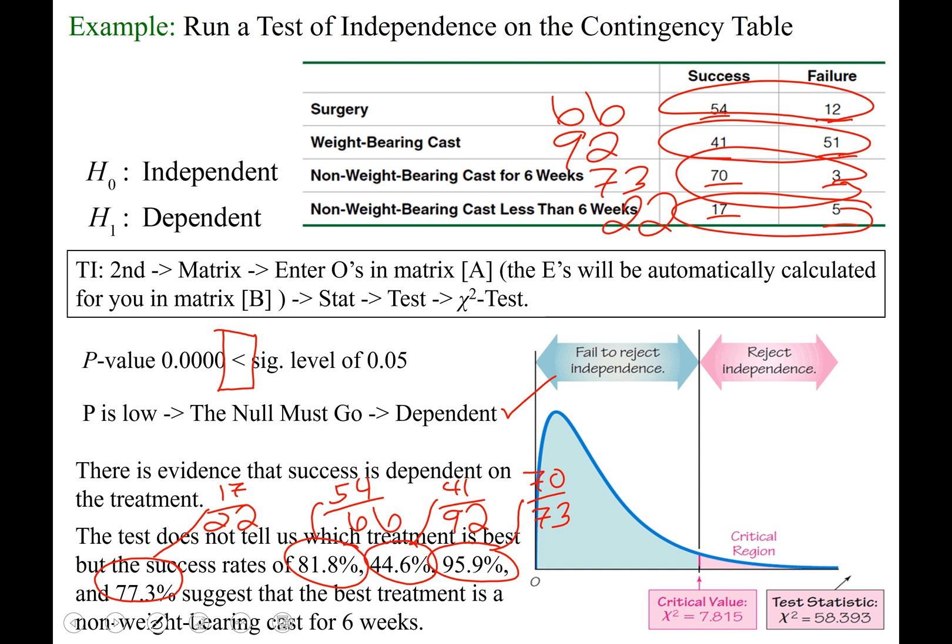Our critical value, chi-squared, was 7.815. Our test statistic was very high. It's way out here somewhere on the number line, 58. So it falls in the rejection region, and that is why we reject the null hypothesis. So reject independence. Just to give you a visual on that.